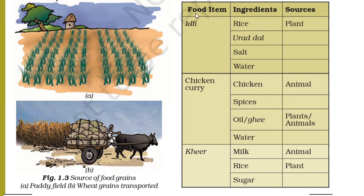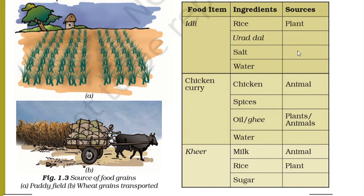In the first column we have listed some food items, in the second column their ingredients are mentioned, and in the third column sources — that means from where they are obtained — is written. The first dish is idli. What are the ingredients of idli? That is rice, urad dal, salt, and water. Rice is obtained from plant. Urad dal is also obtained from plant. Salt is obtained from sea water. Water is obtained from water bodies.